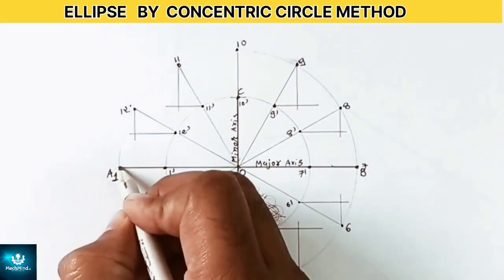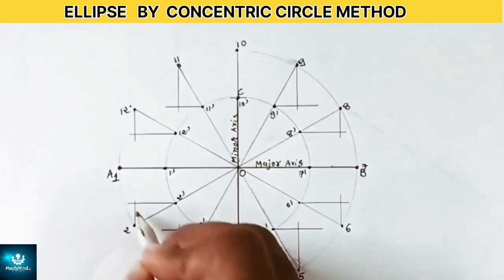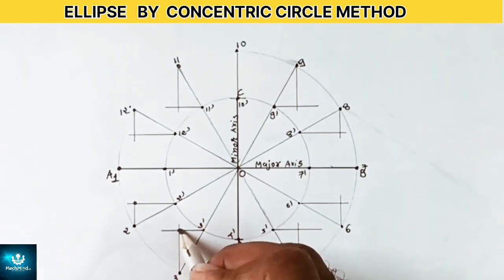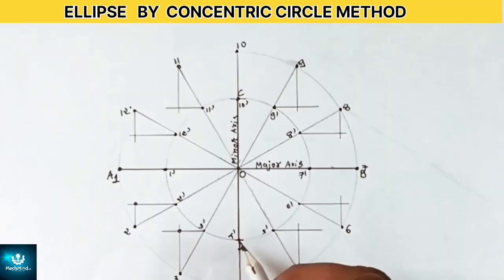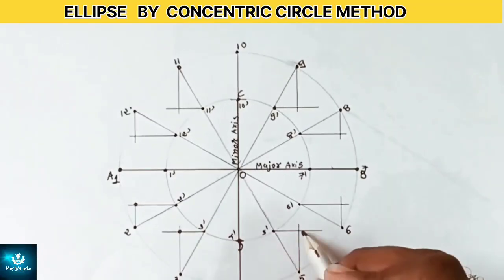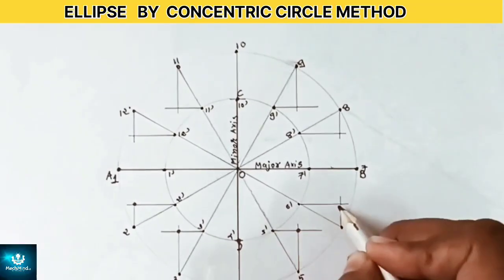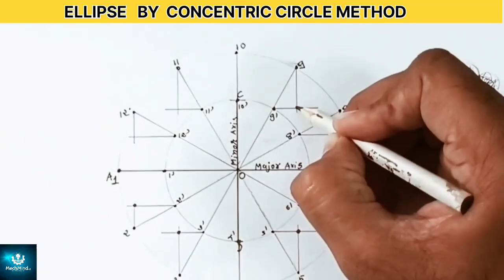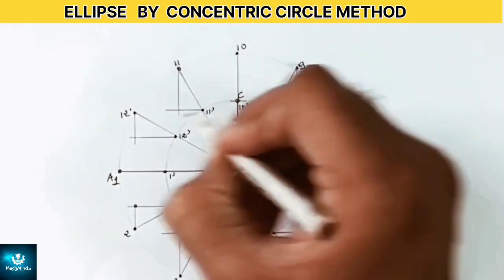Where these horizontal and vertical lines meet, carefully mark these intersection points. Like horizontal line from 3 dash and vertical line from point number 3 meet at a point. Mark these points carefully.